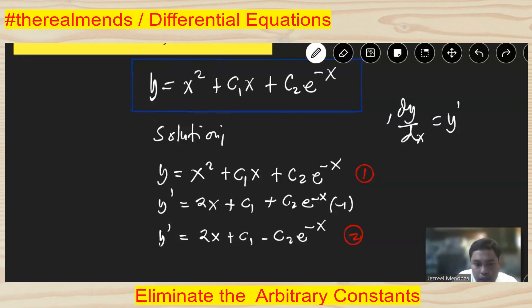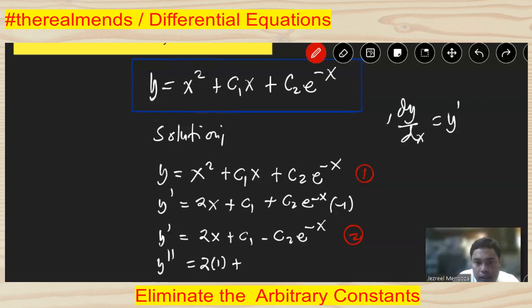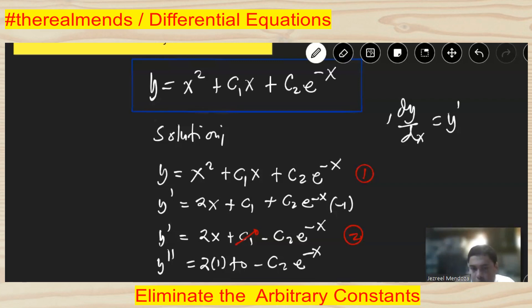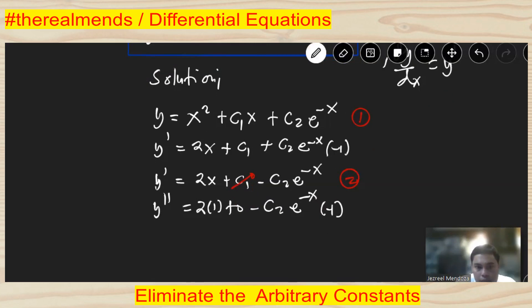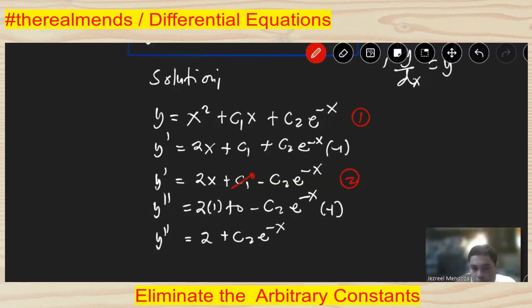The derivative of y prime with respect to x is y double prime. The derivative of 2x is 2, the derivative of c1 is 0, then minus the derivative of c2·e to the negative x: that is c2 times e to the negative x times negative 1. So y double prime equals 2 plus c2·e to the negative x — that is equation number three.